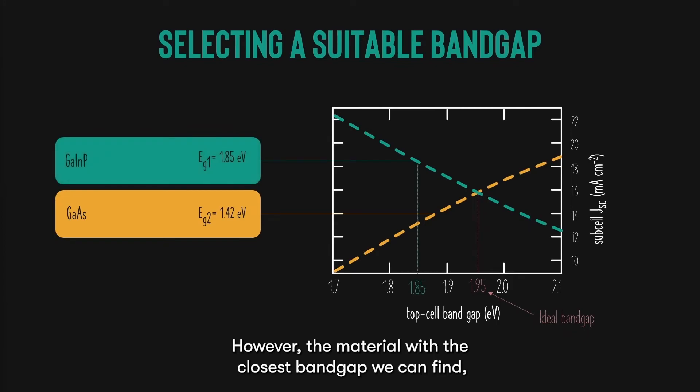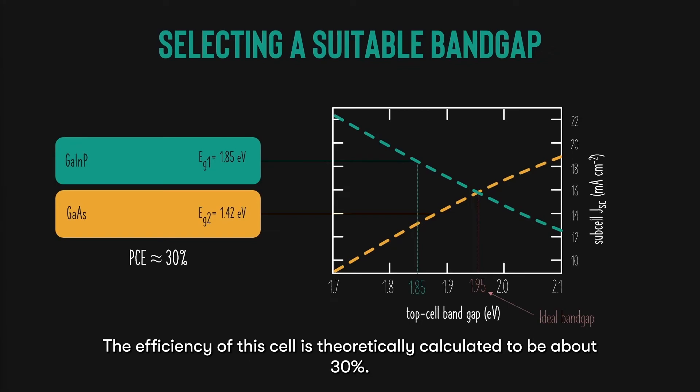However, the material with the closest bandgap we can find, while still satisfying the lattice constant matching criteria is gallium-indium phosphide, which has a bandgap of 1.85 electron volts. The efficiency of this cell is theoretically calculated to be about 30%. However, this means that the currents won't match.